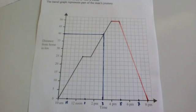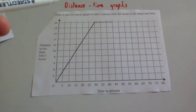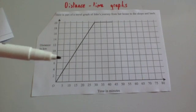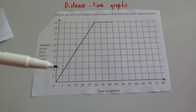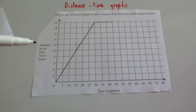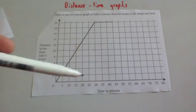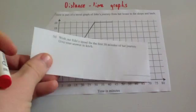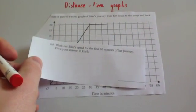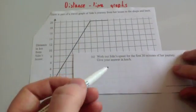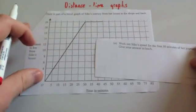Let's look at another question. Here's part of a travel graph of Sian's journey from her home to the shops and back. Distance in kilometres from Sian's home is on the vertical axis and time in minutes is along the horizontal axis, going up in increments of 5 minutes. The first part of the question says: work out Sian's speed for the first 30 minutes of her journey, giving the answer in kilometres per hour.